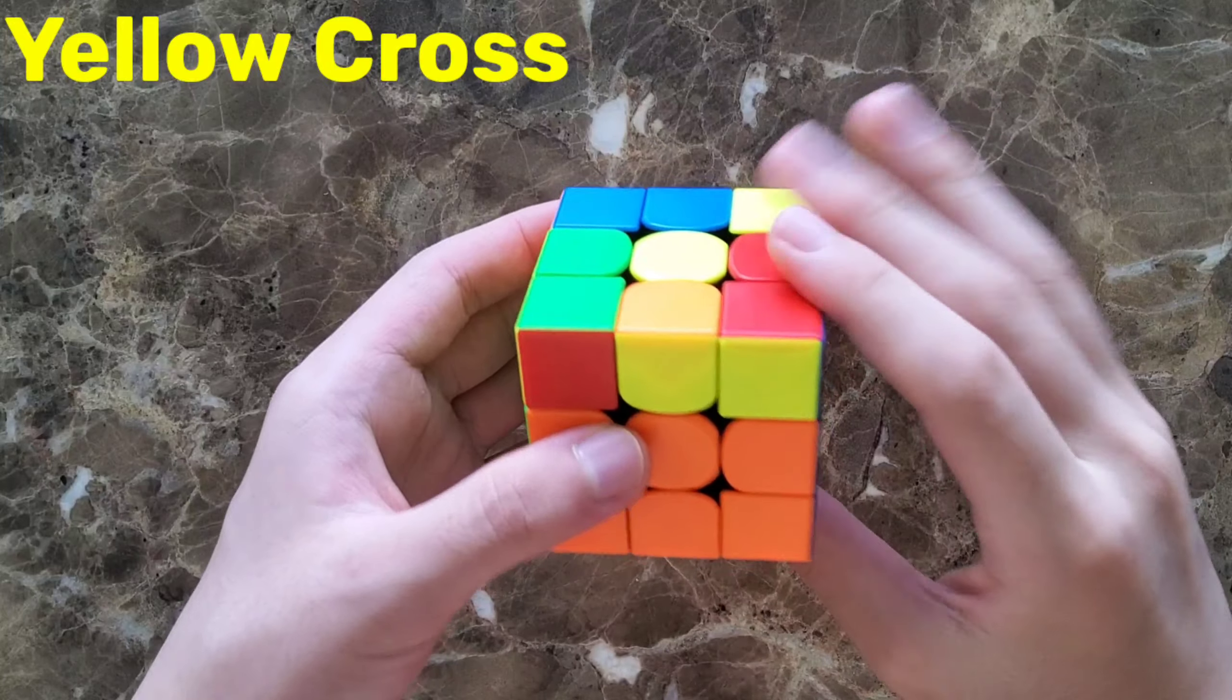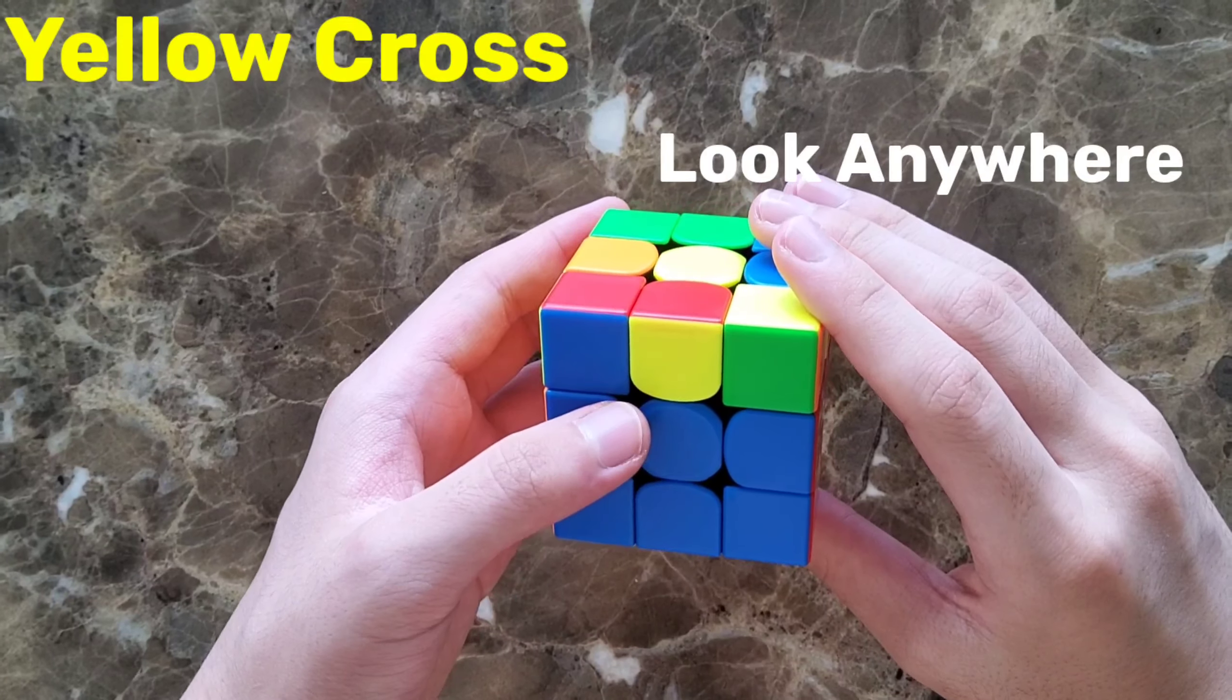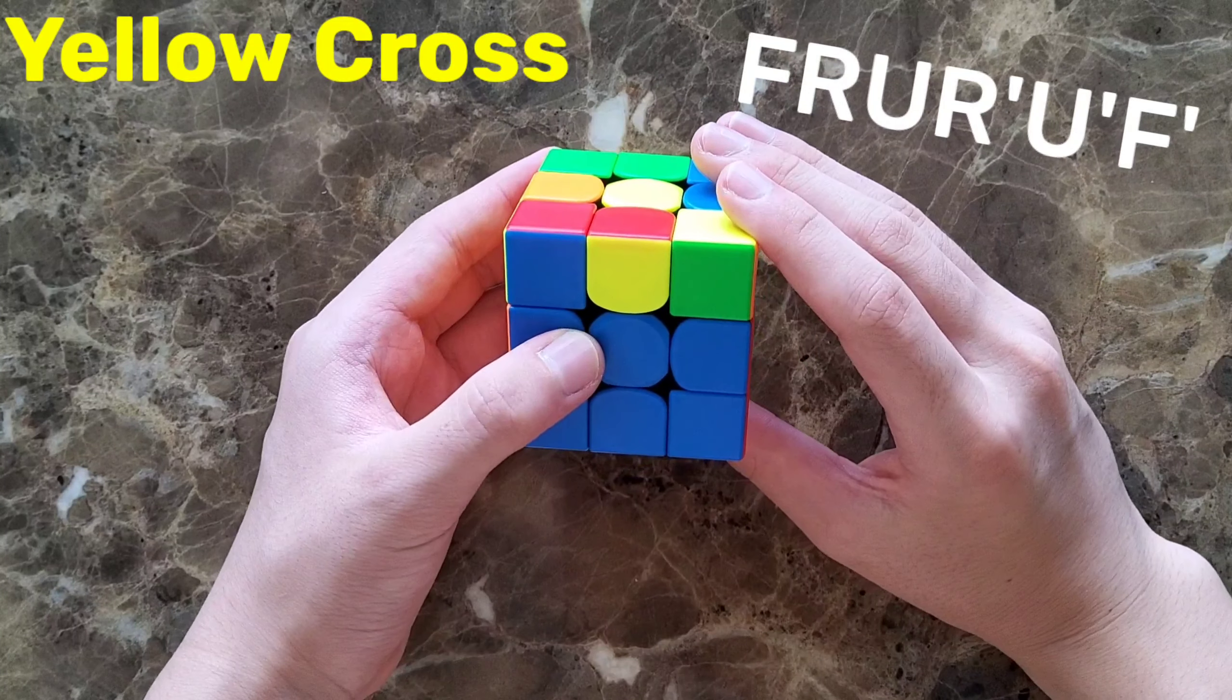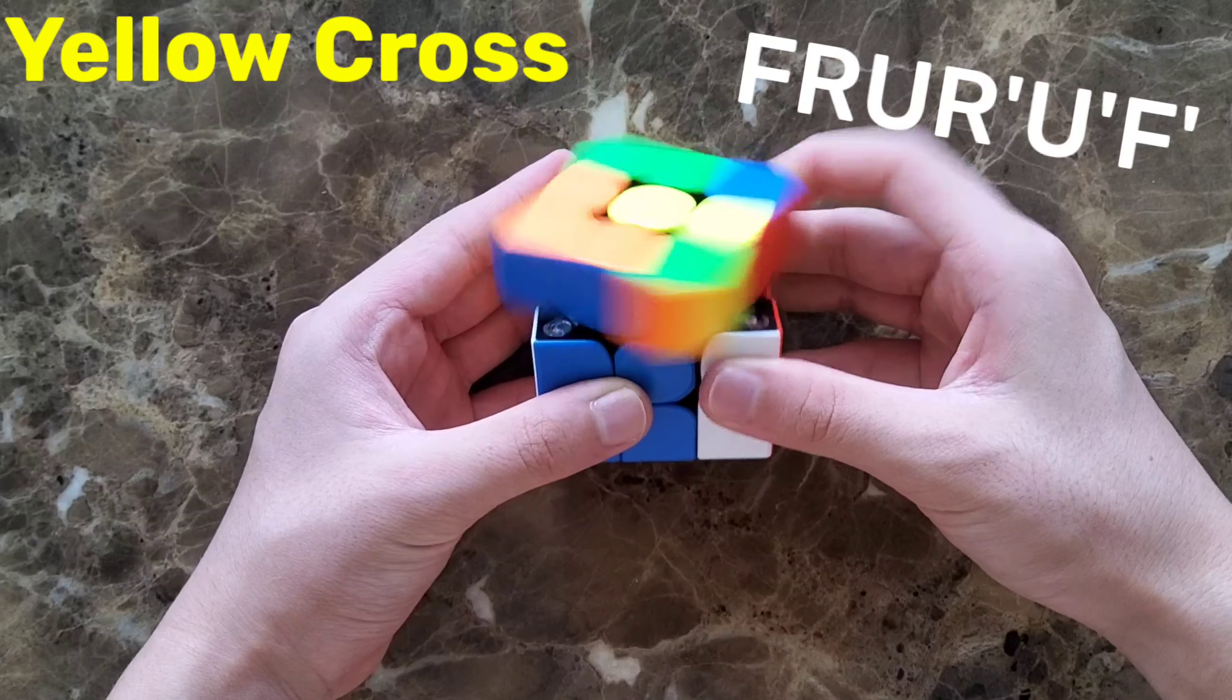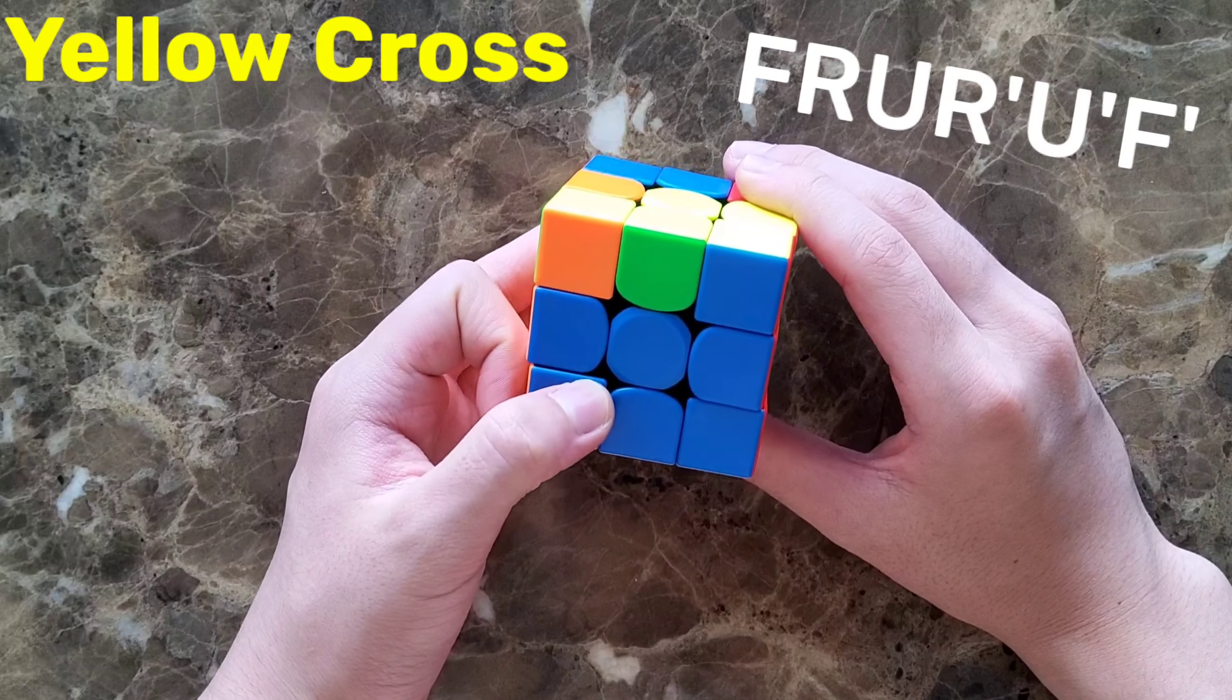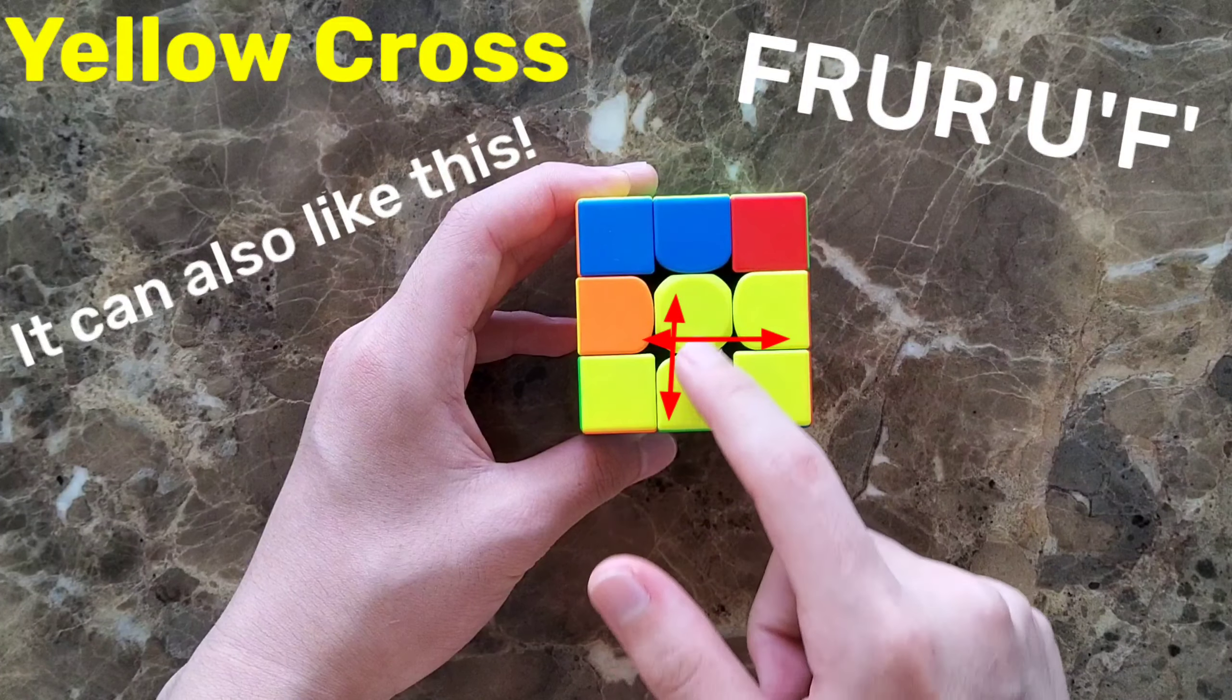The first case to make a yellow cross is just a yellow dot. To make a cross, you use this algorithm. After doing that algorithm, it makes like this. This is case 2.